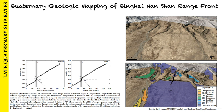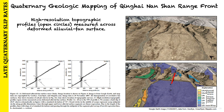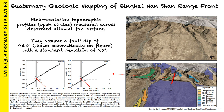In the study, they performed two high-resolution topographic profiles measured across deformed alluvial fan surfaces. Profile number one is 20 meters to the northwest of profile number two. They assume a fault dip of 45 degrees with a standard deviation of 7.5 degrees.